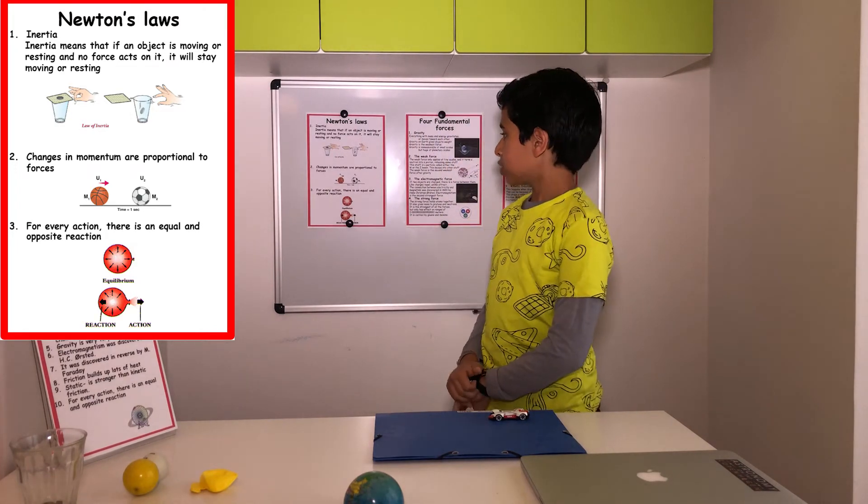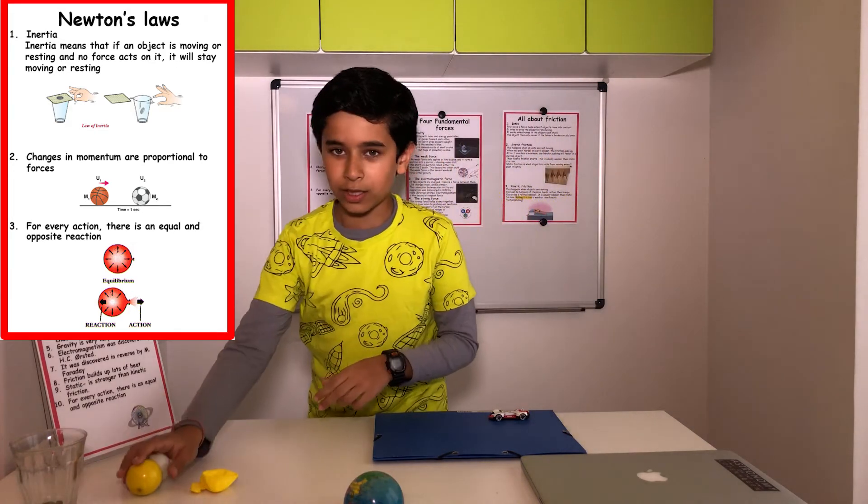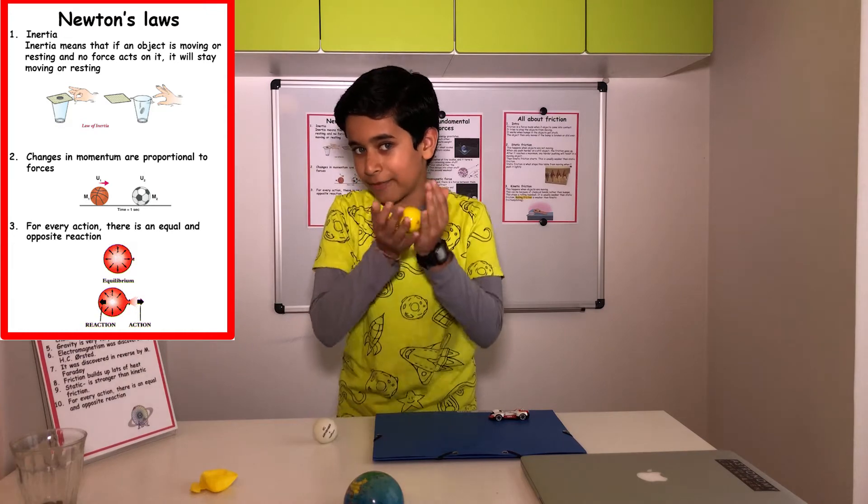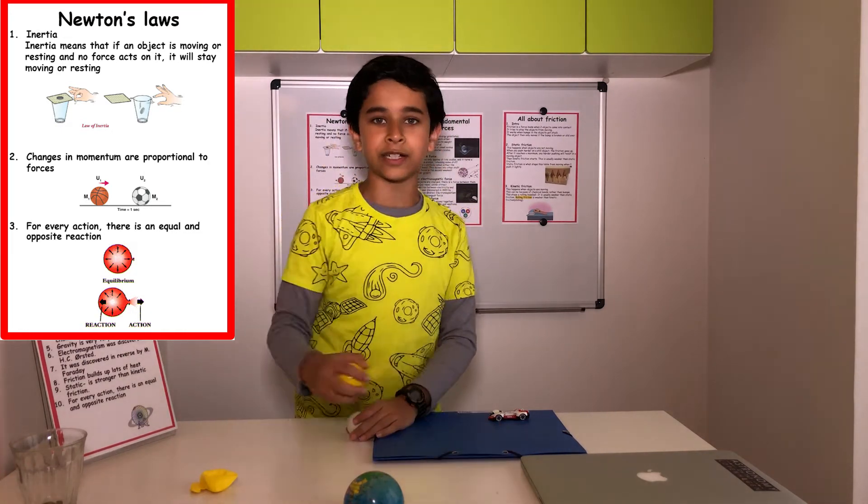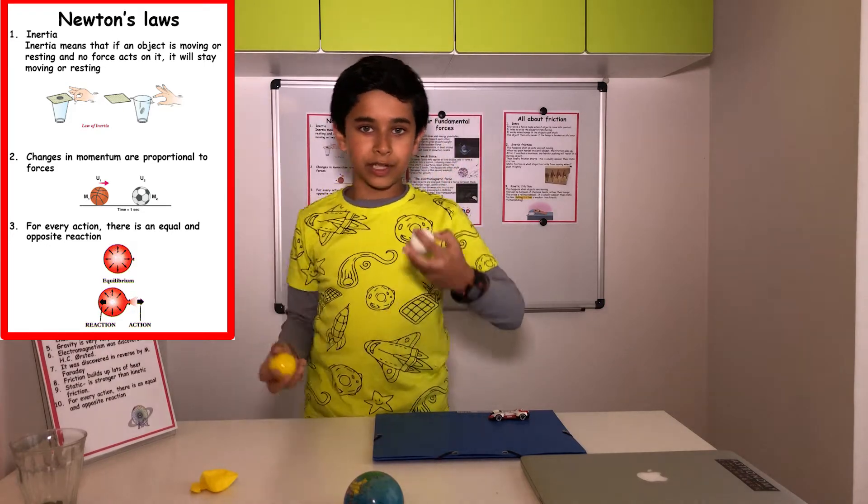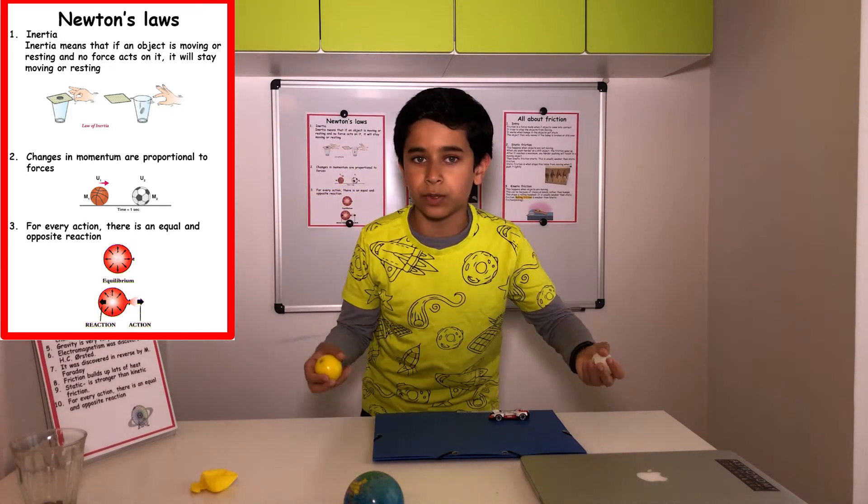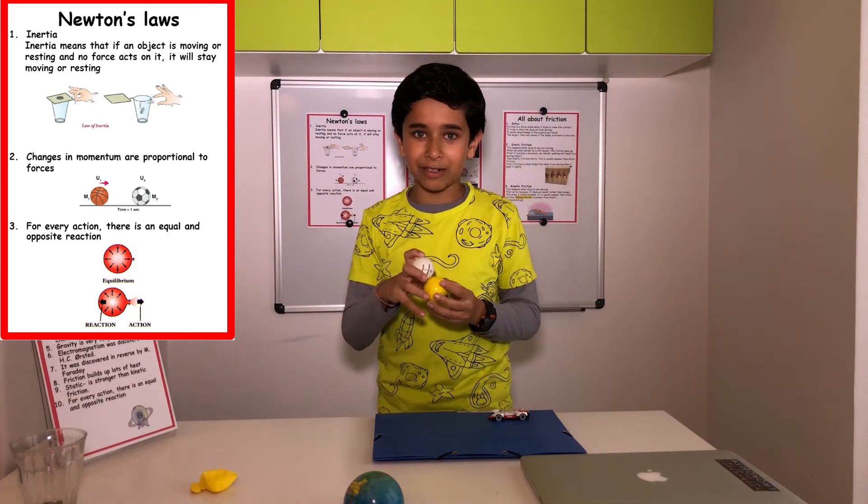Momentum is mass times velocity. So if this really heavy ball is moving at a meter per second, then it will have a high momentum. But if this really light one is moving at a meter per second, it'll have a low momentum because it's so light. So I have an experiment.